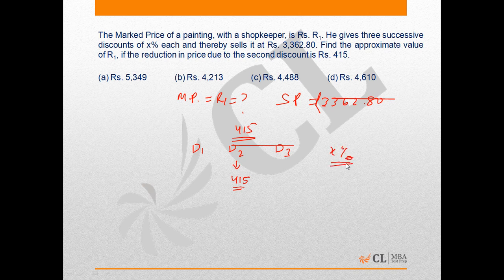On the basis of the given information, if we take a traditional route like subtracting x percent from R1 and then finding the value of the article or painting after the first discount, in case it is R2, and then again reducing the price by x percent in event of the second discount, suppose that price is R3. Here the difference between R2 and R3 is given as 415, so it would be quite complex and time-consuming.